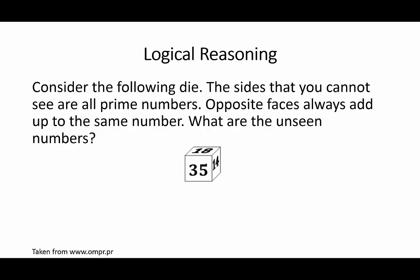Since 18 and 14 are even, the prime numbers that you add to them must be different, and hence must be odd. So when you add those even numbers with an odd number, you are going to get an odd number. Hence, 35 plus the number opposite to it must also be odd.